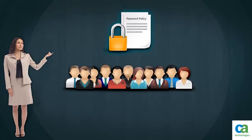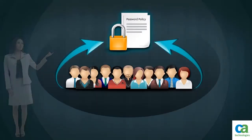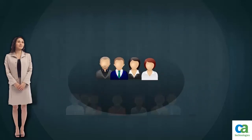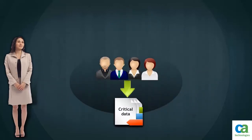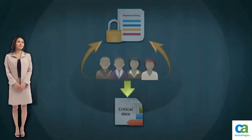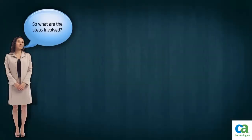Assume we have one password policy set for the entire user directory — the main group. Now, senior management access is critical data. To ensure that the access is more secure, I have to create a separate password policy for that group — the subgroup. So, what are the steps involved?